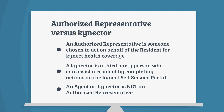An Authorized Representative is someone chosen to act on behalf of the resident for Connect health coverage. This may be a family member or other trusted resident. Some Authorized Representatives may also have legal authority to act on the resident's behalf. A Connector is a third-party person working for an approved organization who can assist a resident by completing actions on the Connect self-service portal. Agents or Connectors working with residents should indicate they are that resident's agent or connector, not their authorized representative.